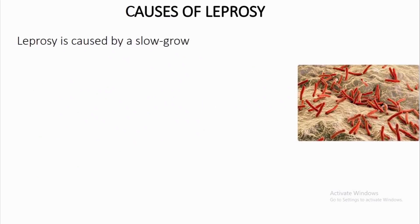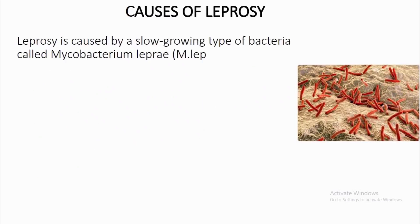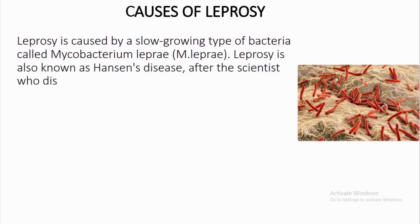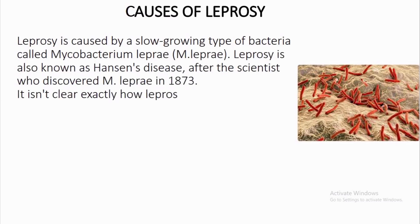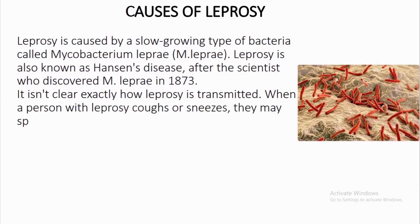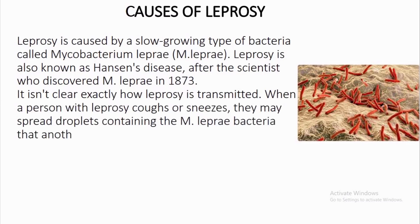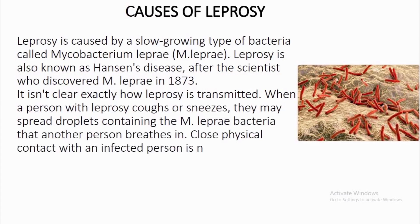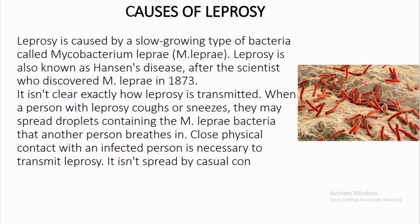Causes of leprosy. Leprosy is caused by a slow-growing type of bacteria called Mycobacterium leprae, or M. leprae. Leprosy is also known as Hansen's disease, after the scientist who discovered M. leprae in 1873. It isn't clear exactly how leprosy is transmitted. When a person with leprosy coughs or sneezes, they may spread droplets containing the M. leprae bacteria that another person breathes in. Close physical contact with an infected person is necessary to transmit leprosy.